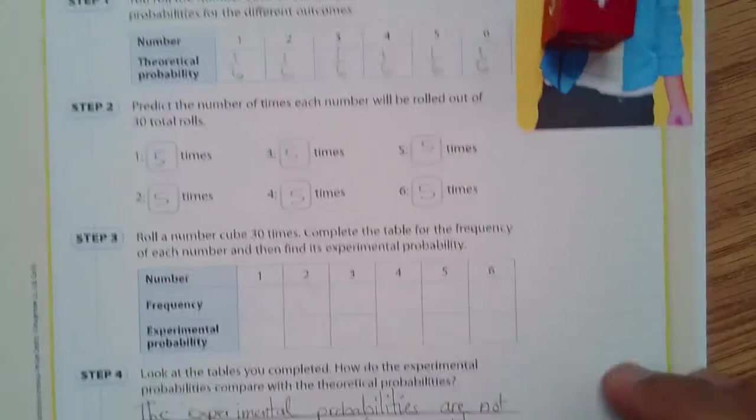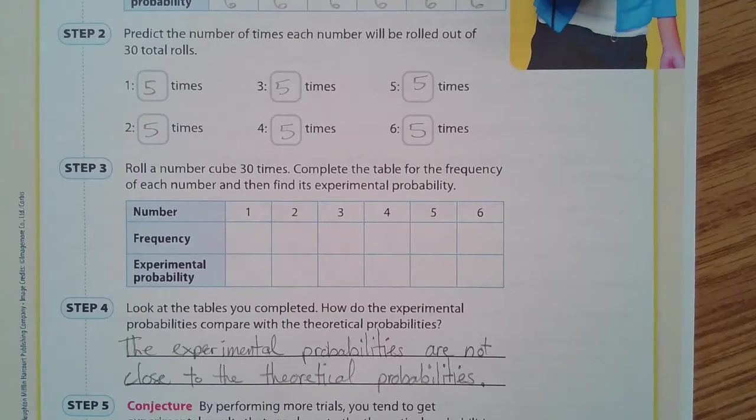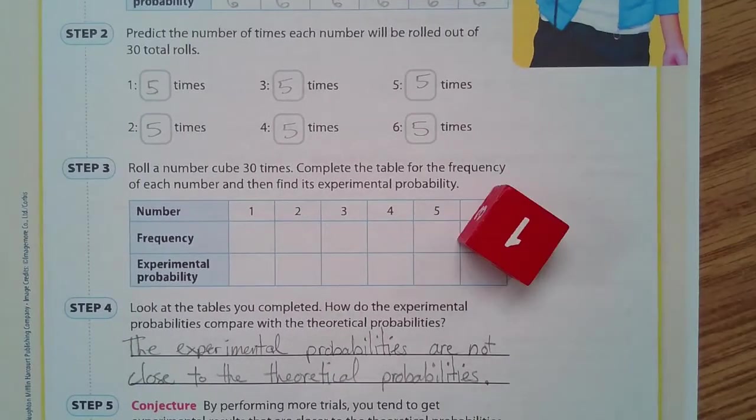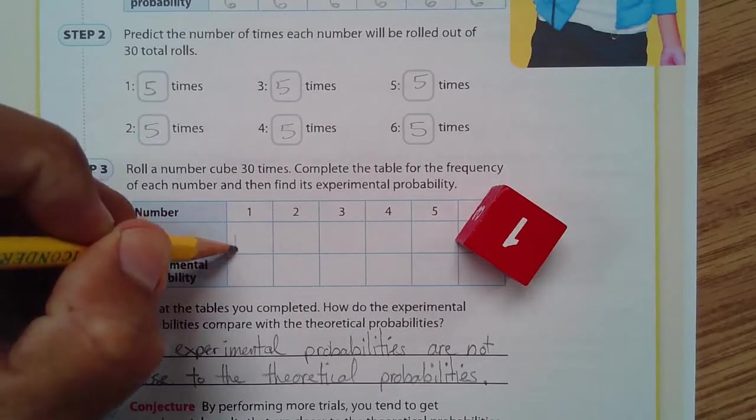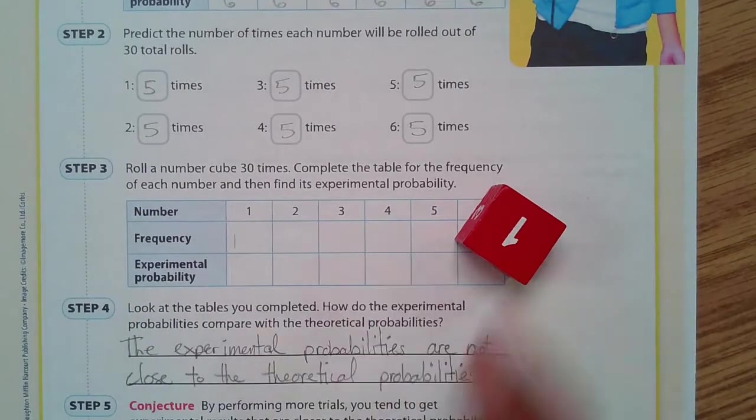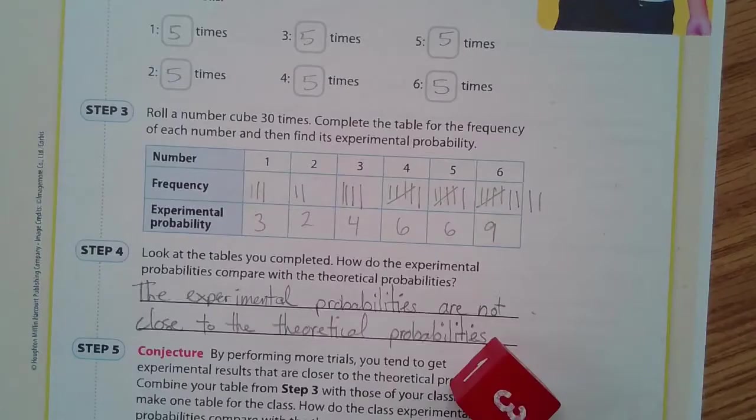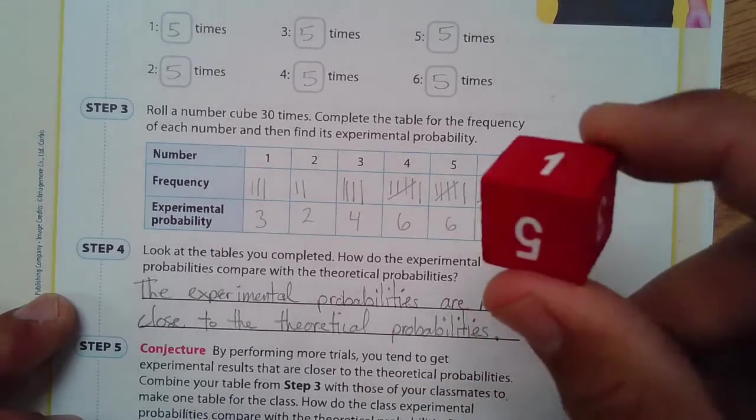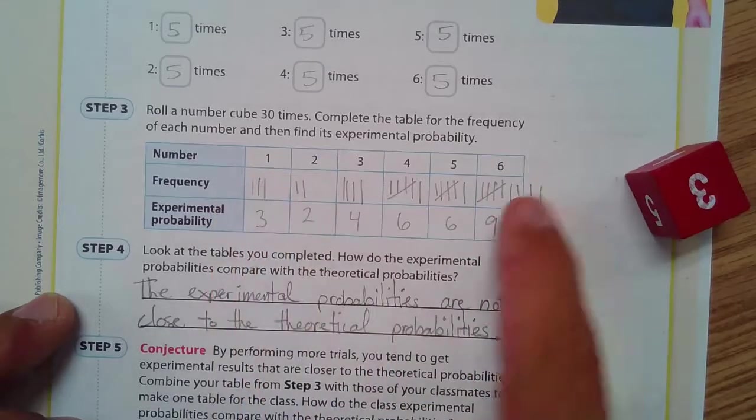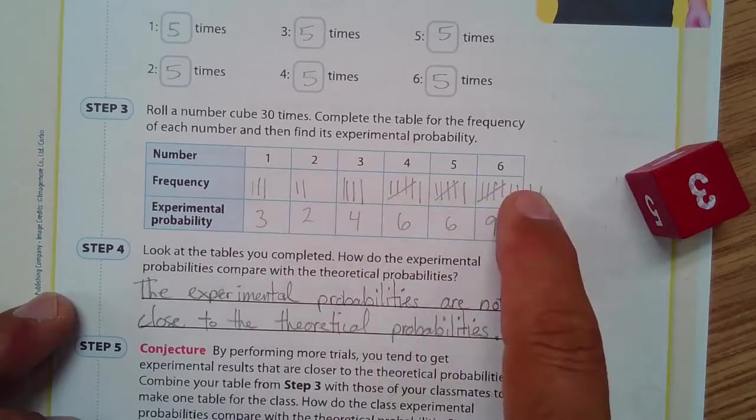And for the experimental, what I'm going to do is I'm going to roll this. So, there's 1. So, 1. And I'm going to do the rest of them. I'm going to pause this and I'll show you the results. Okay. So, the experiment is done and I rolled this 30 times and this is what happened.